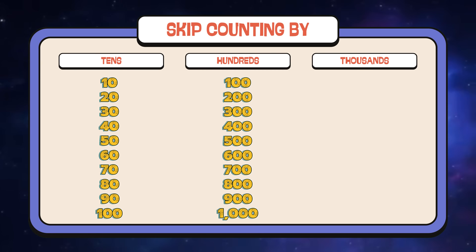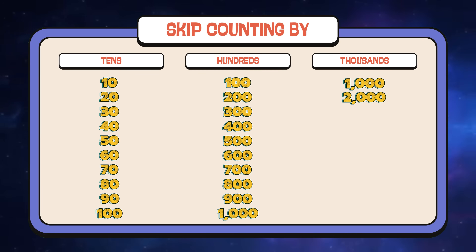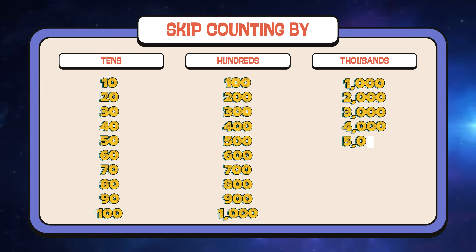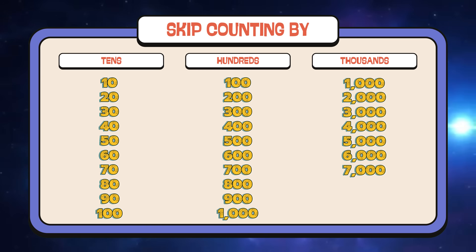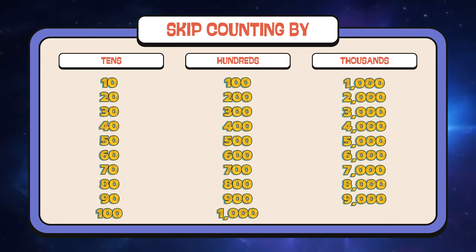Now, let's count by thousands. 1,000, 2,000, 3,000, 4,000, 5,000, 6,000, 7,000, 8,000, 9,000, 10,000.